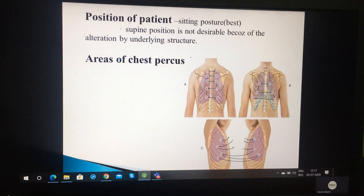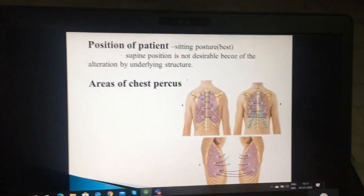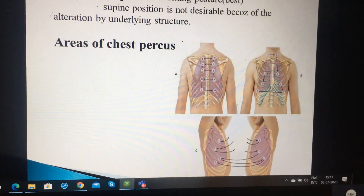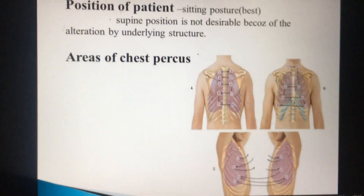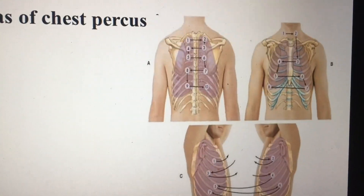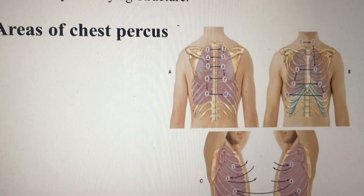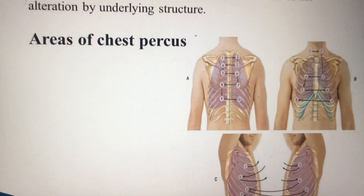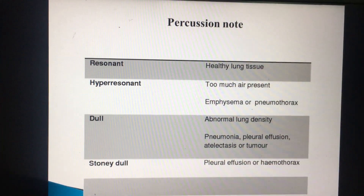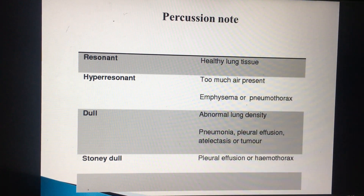You have to percuss in the zigzag pattern, 1 through 10, posteriorly, then anteriorly, then laterally. Percussion note in healthy lungs is resonant. Hyper-resonant whenever there is too much air, such as in pneumothorax or emphysema. Dull sound whenever there is abnormal lung density, such as pneumonia, pleural effusion, or haemothorax.